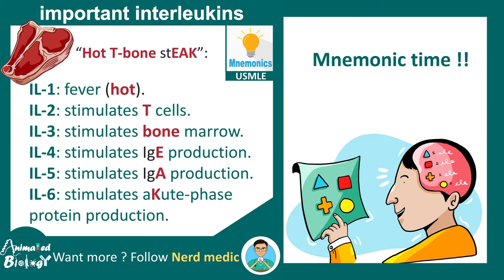The mnemonic is 'HOT T-BONE STEAK.' HOT stands for fever, corresponding to IL1. IL2 basically stimulates the T-cell — that's the T-BONE part. IL3 stimulates bone marrow. IL4 stimulates IgE production, IL5 stimulates IgA production, and IL6 stimulates acute phase protein production.